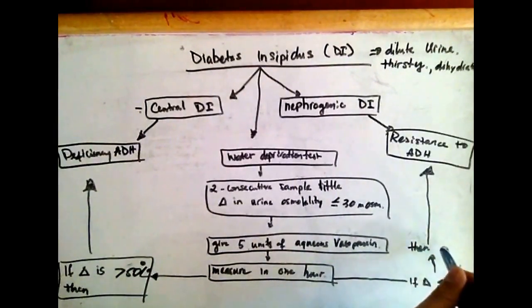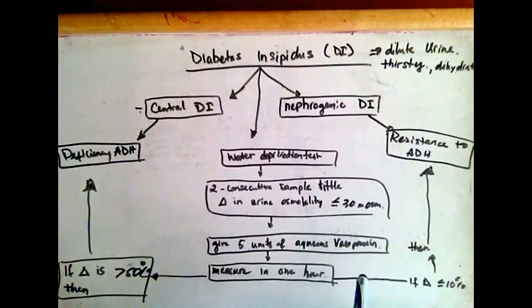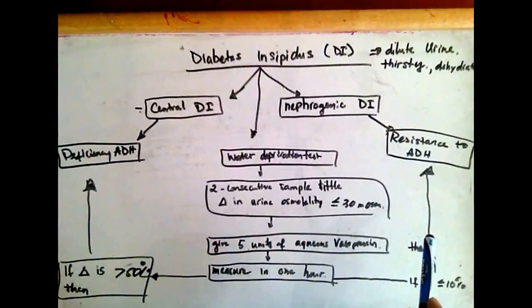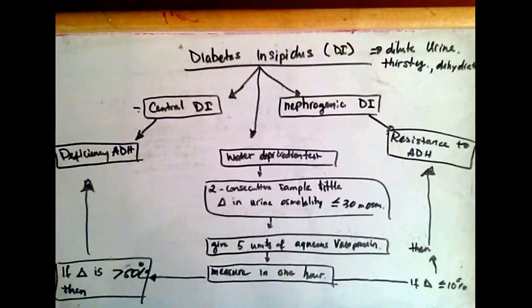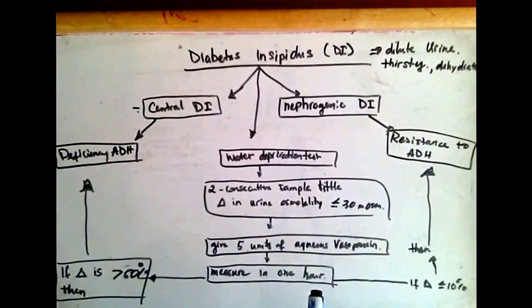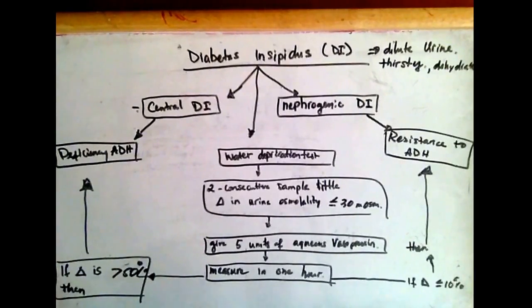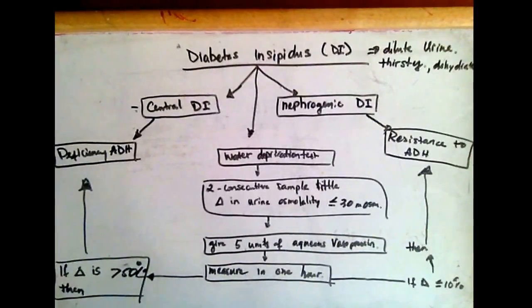In this case, there is resistance to ADH, so no matter how much ADH we give them, it still doesn't work because at the receptor level, the ADH receptor does not respond to ADH. Therefore, no matter how much we give to patients with nephrogenic diabetes insipidus, the urine won't concentrate.